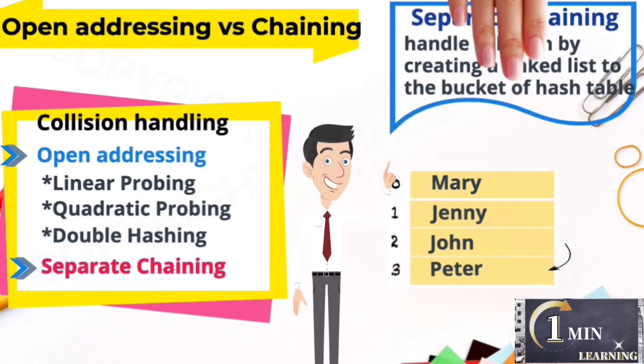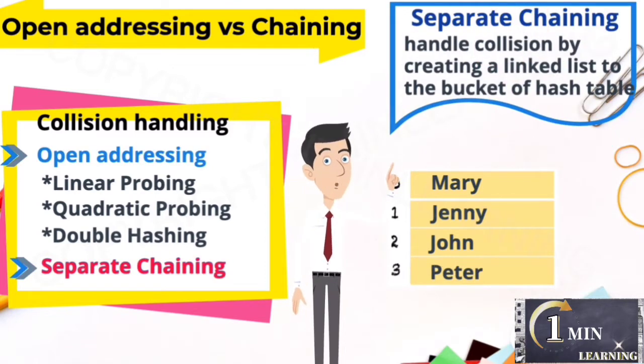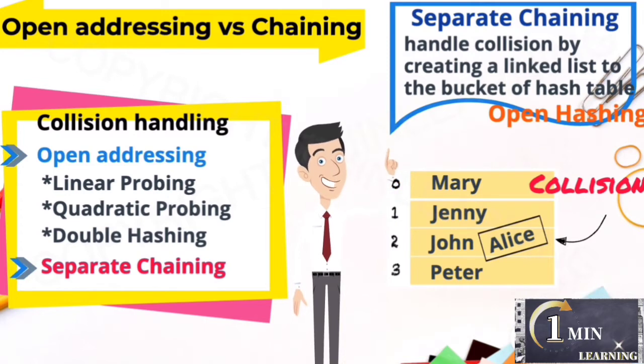Separate chaining is to handle collision by creating a linked list to the bucket of hash table. It's called open hashing. We can solve collision in this way.